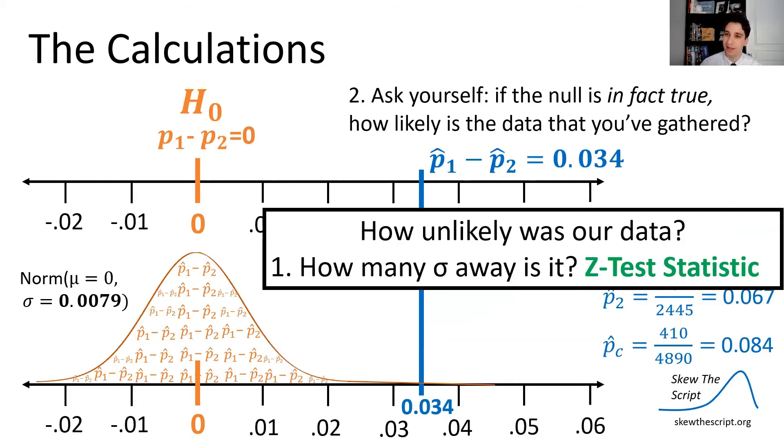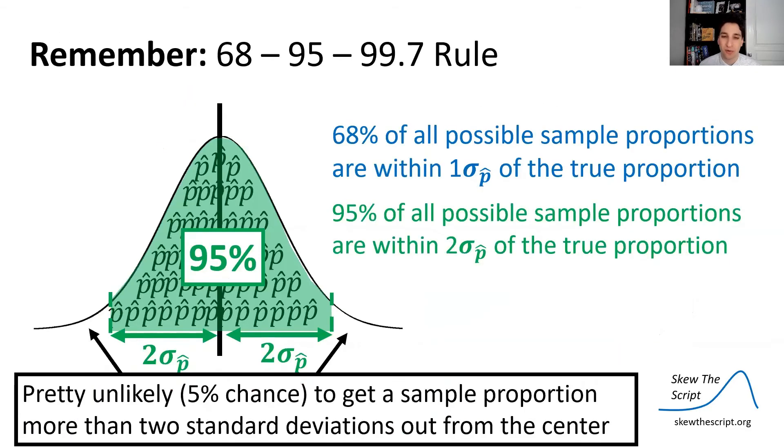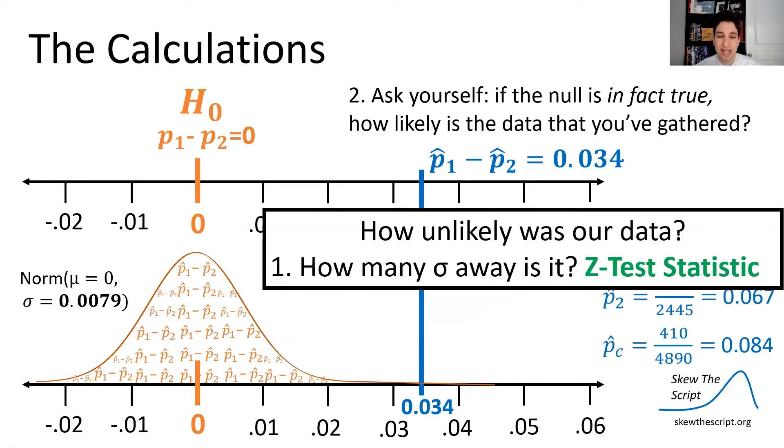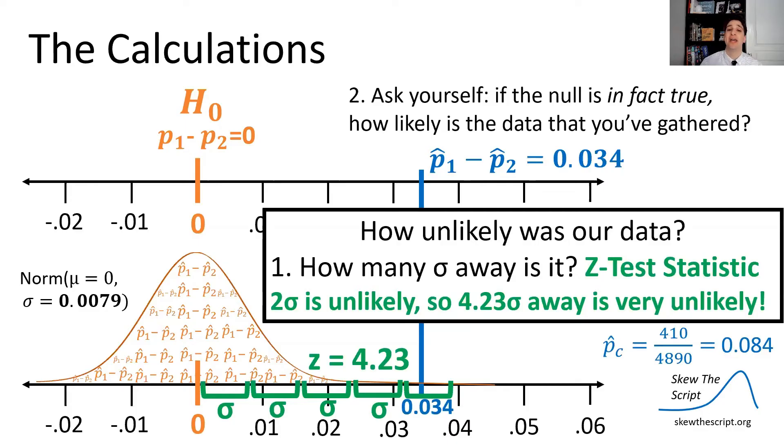Well, one way to measure that is how many standard deviations, how many standard errors is it away from the null? This is what we call the z-test statistic. We did this with one sample proportions too. Now recall that with the 68, 95, 99.7 rule, if you're more than two standard deviations out, you only leave about five percent of the tails, it's pretty unlikely to be more than two standard deviations out from the center. So let's see if this is more than two standard deviations out from that null hypothesis. We're going to do some calculator stuff that I'll show you in a bit, and we get the z-test statistic. The number of standard errors away from the null hypothesis we are is 4.23. So if two standard errors away is unlikely, then 4.23 is very unlikely.